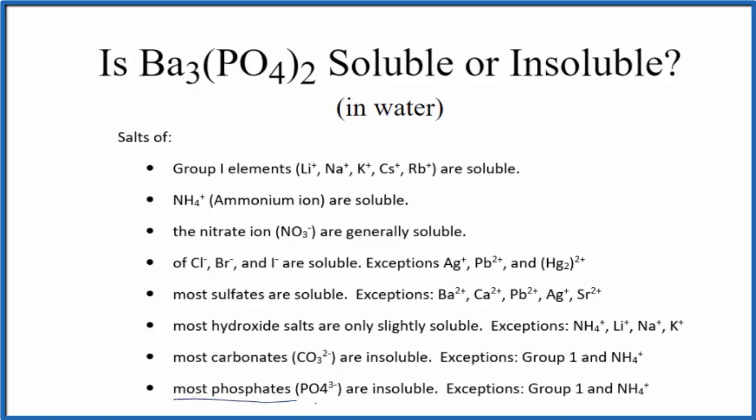It says most phosphates, that's that PO4³⁻ ion, they're insoluble. There are some exceptions, elements in group one on the periodic table and compounds with the ammonium ion. But according to our rules, barium phosphate should be insoluble in water.